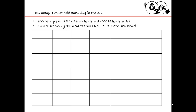I'm also going to assume that there's only one TV per household — again, completely false, but for now this is just the assumption. Now I need to set up the table. I'll put the number of million households per region, the percentage that are buying a new TV, and the total million number. I'll also put in some notes to explain characteristics about each region.